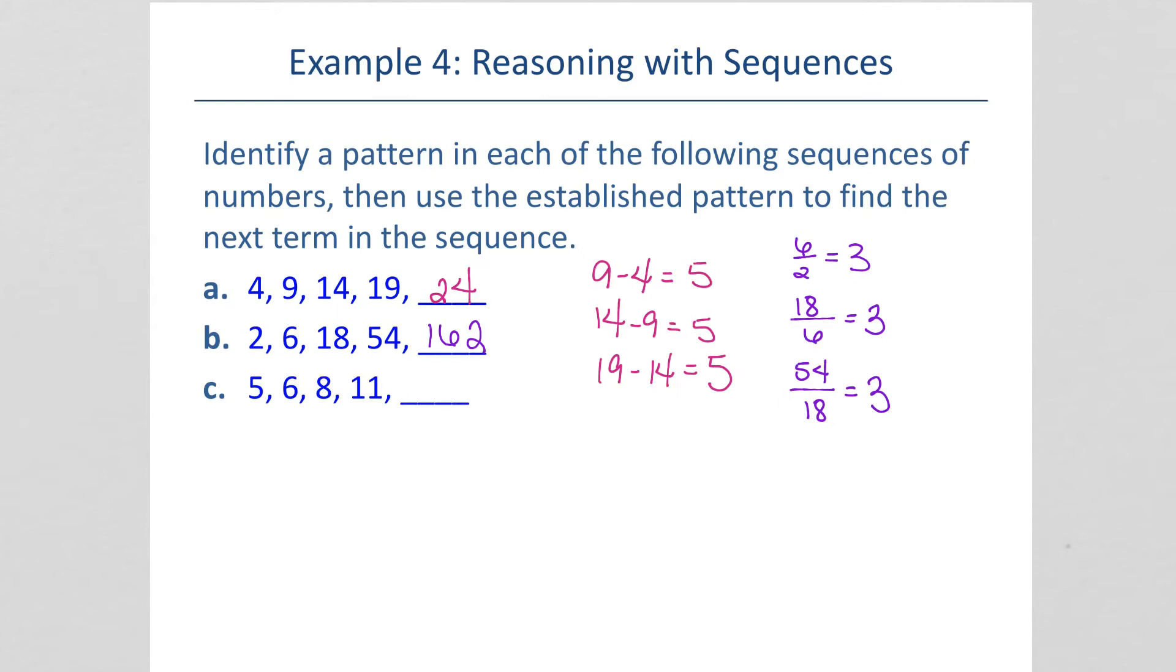And then the next one, we've got 5, 6, 8, 11. Let's see. From 5 to 6, we added 1. From 6 to 8, we added 2. From 8 to 11, we added 3. I think I see it. So to get the next one, we would add 4 and get 15.